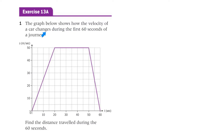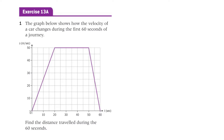Exercise 13a, Question 1. The graph below shows how the velocity of a car changes during the first 60 seconds of a journey — velocity in metres per second versus time. Find the distance travelled during the 60 seconds. Since velocity is on the y-axis and time on the x-axis, the area under the graph is the distance. Break it into three parts: a triangle of 20 times 50 divided by 2, plus a rectangle of 30 times 50, plus a triangle of 10 times 50 divided by 2. Add those three to get the distance.